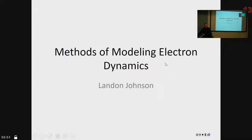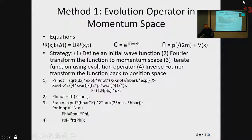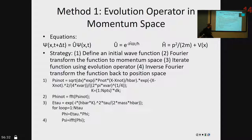The first method converts the initial function into momentum space, applies the evolution operator in momentum space, and then does the inverse Fourier transform back into position space. In this case, momentum is not an operator but the actual value of momentum, which is why it can be used directly in momentum space. The second method takes the momentum operator, converts it into position space, plugs it into the Hamiltonian and thereby the evolution operator, and evolves the wave packet in position space using a for loop.